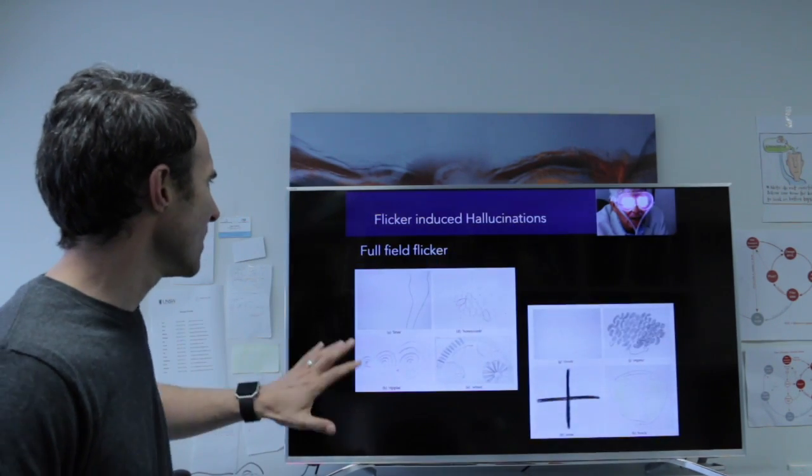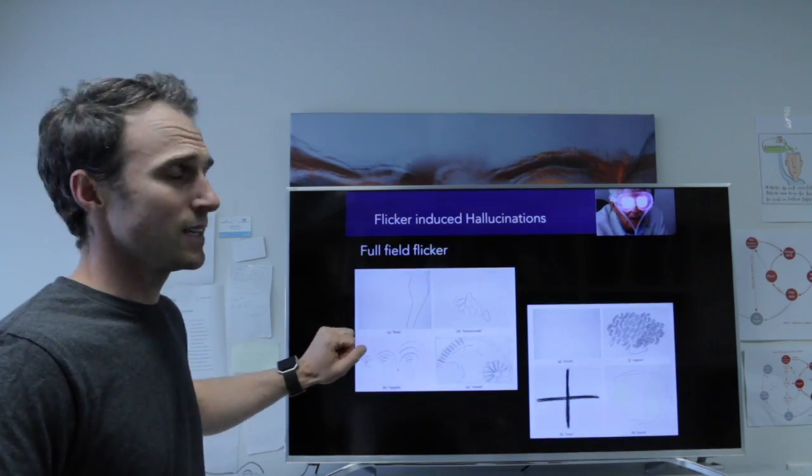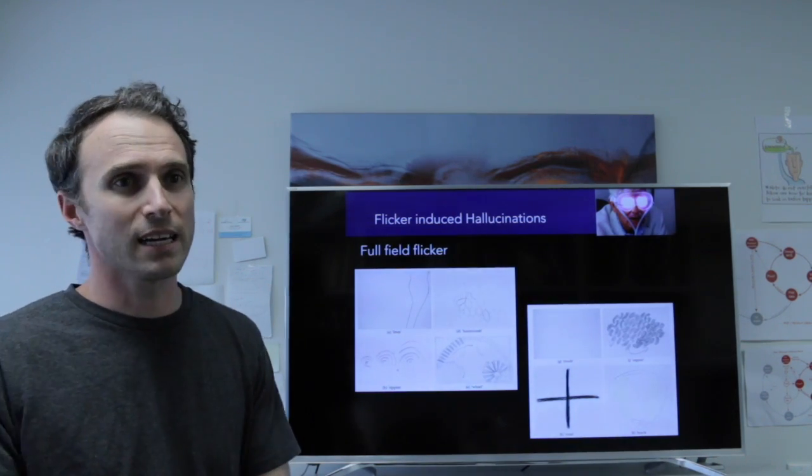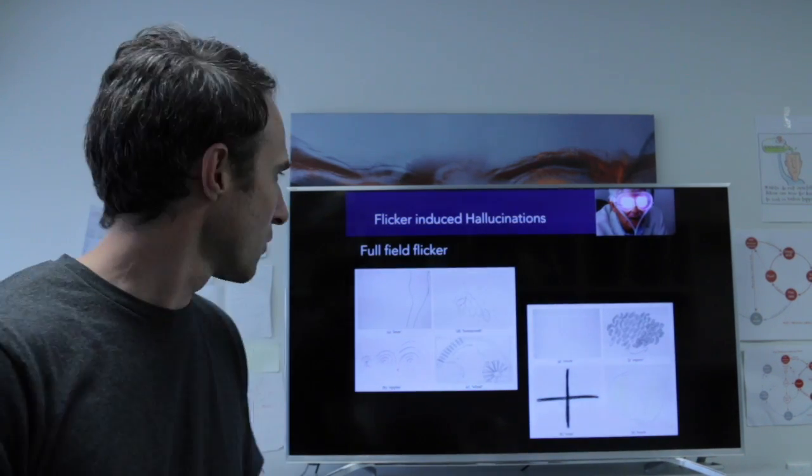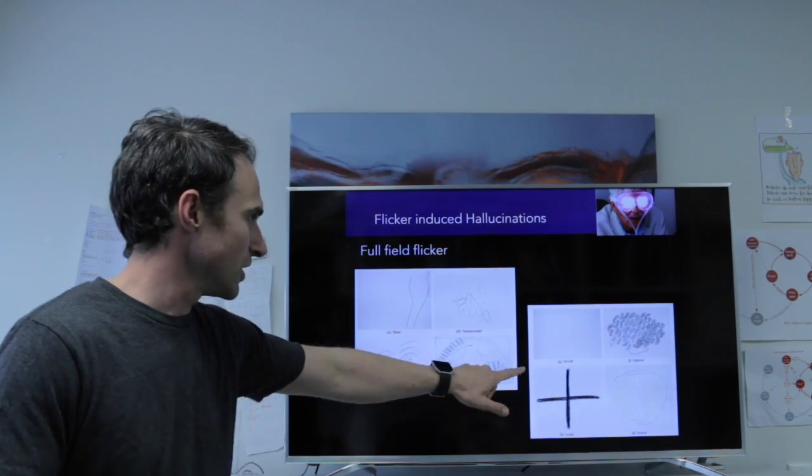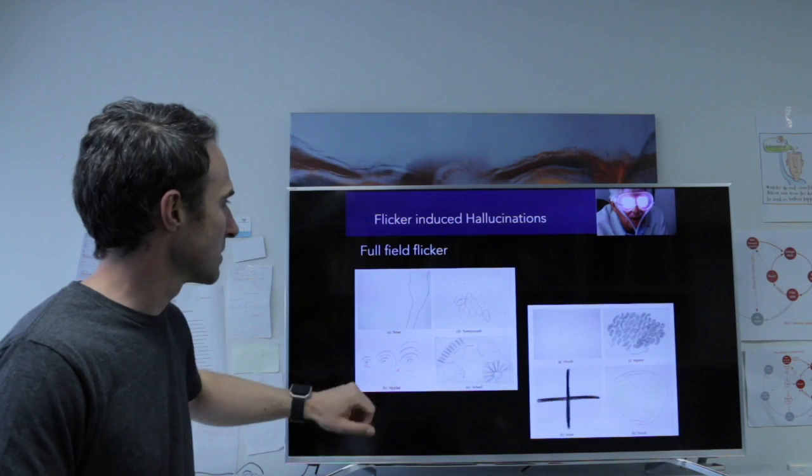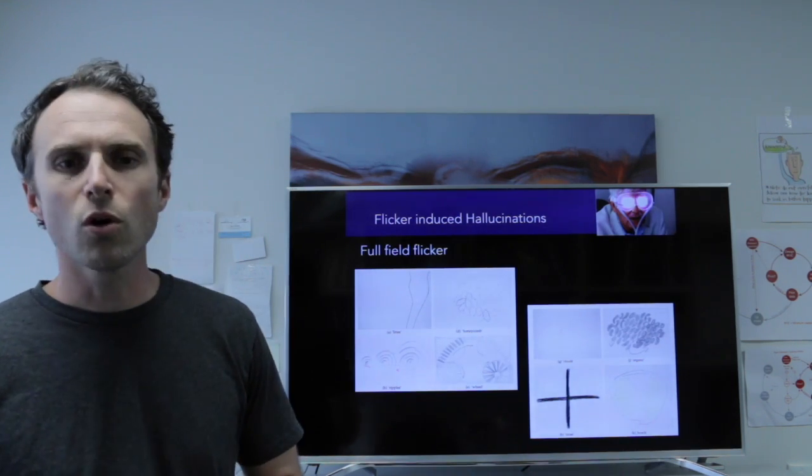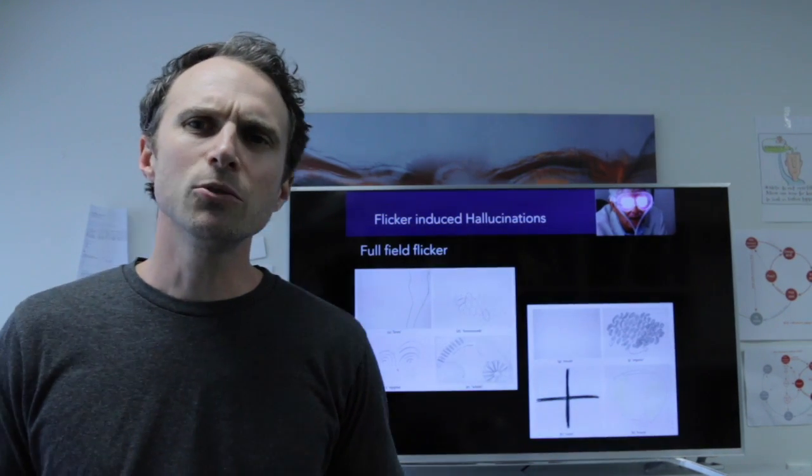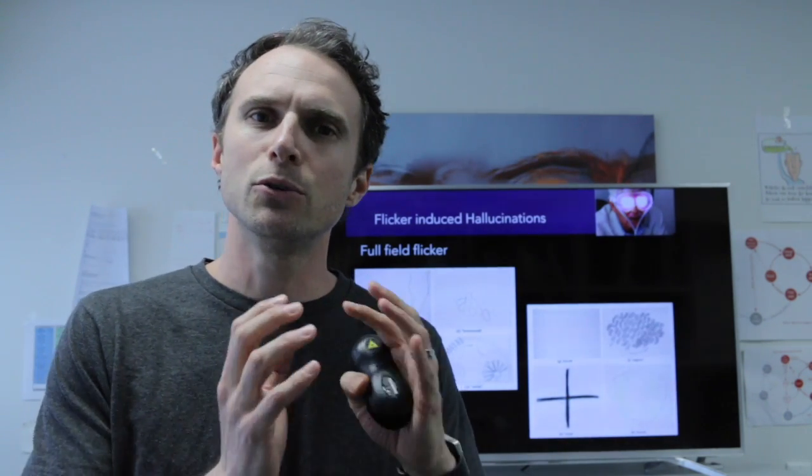What people have done is got participants in studies to draw the hallucinations, to get a crayon or pencil and draw them. And here's some examples of that. You see a cross, you can make out some windmills there, some hexagon patterns, some spirals, some dots, all kinds of things. But we can't do a lot of science with drawings. They're too hard to interpret, they're too subjective.